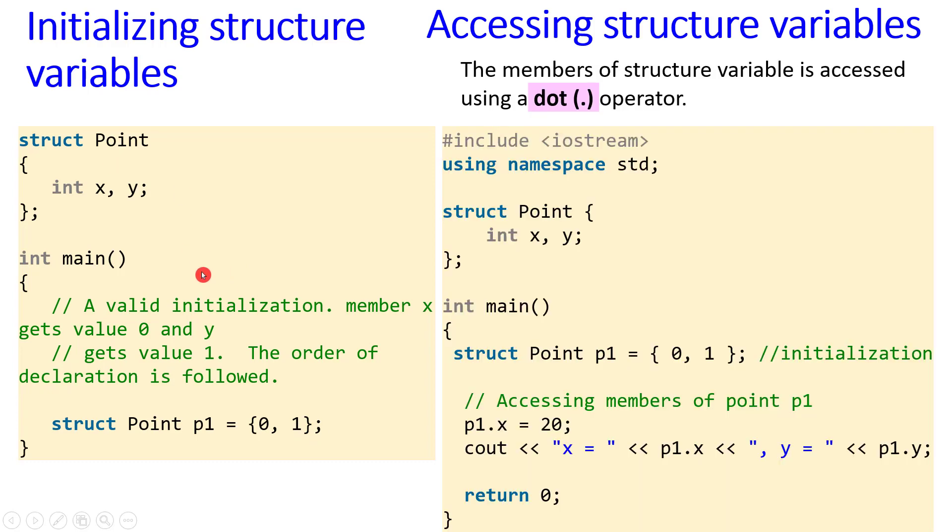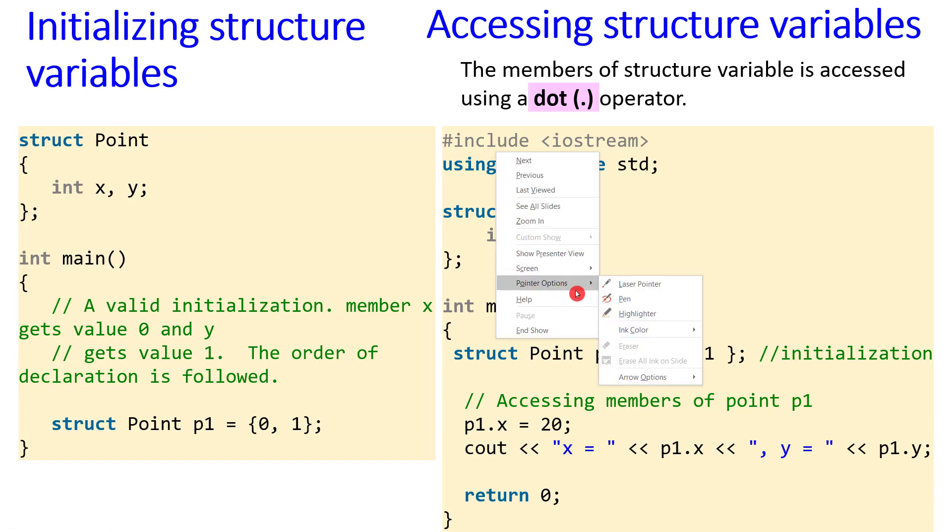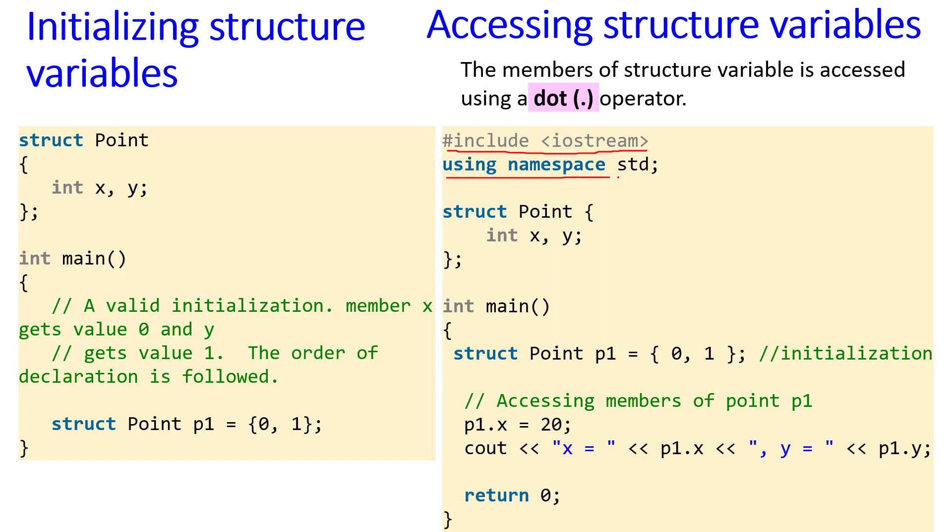How to access and change values is by accessing the variable with the dot operator. The members of structure variable are accessed using a dot operator. You'll see the program in detail. You have the header files: #include <iostream>, using namespace std, then struct as the user-defined data type. Point is the name of the structure. Curly braces: you're defining the member definition integer x, y, ending with semicolon for the member definitions, then the curly braces close with a semicolon. This is the structure definition.